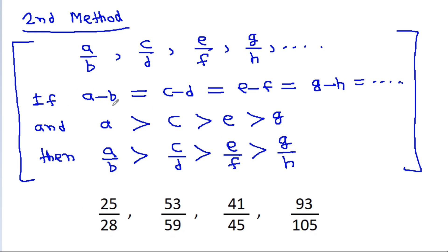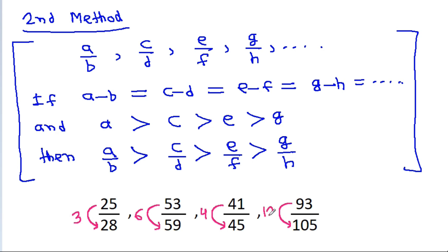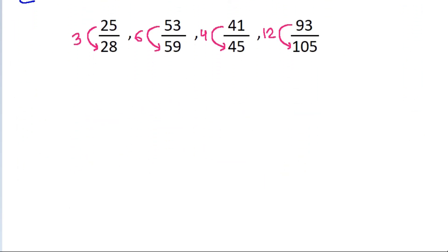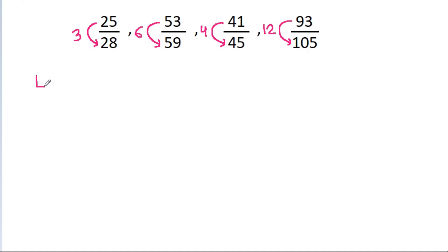Here the difference between 25 and 28 is 3, the difference between 53 and 59 is 6, the difference between 41 and 45 is 4, and between 93 and 105 is 12. The LCM of 3, 6, 4, and 12 is 12.